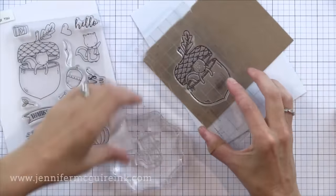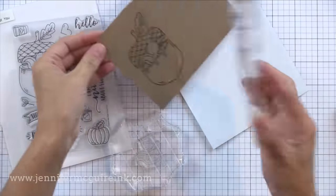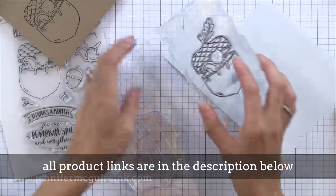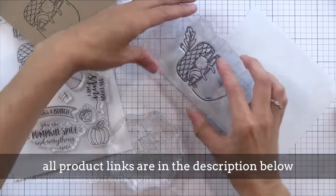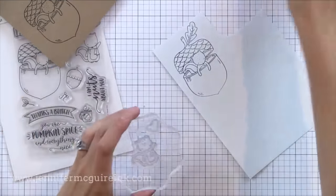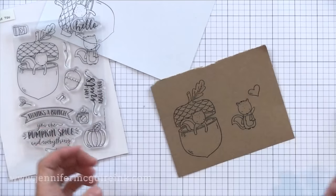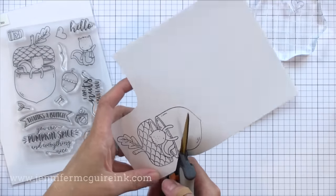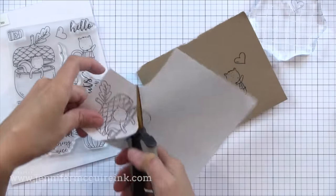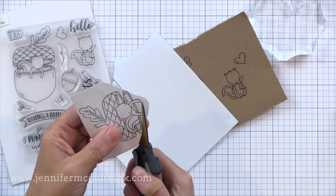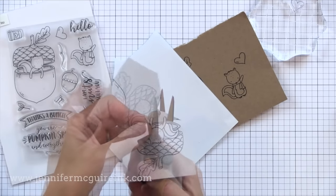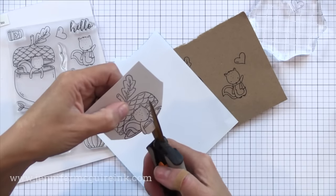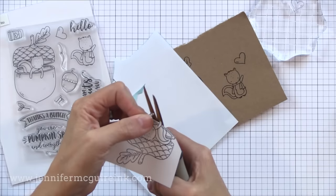I am inking it up with Hero Arts black ink, and I'm going to stamp it onto some Ranger Craft cardstock, and then also onto a piece of Inkadinkado masking paper, because I need to mask his little paws so that he can be holding a heart. I'm also stamping a few other pieces on the craft cardstock so that I can create two projects.